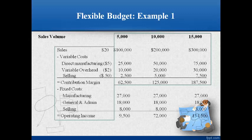Next, subtract all fixed costs to compute the operating income. Notice that total sales, total variable cost, and total contribution margin change with changes in sales volumes. Fixed costs do not change as volume changes. Operating income increases by the same amount that total contribution margin increases because fixed costs do not change.